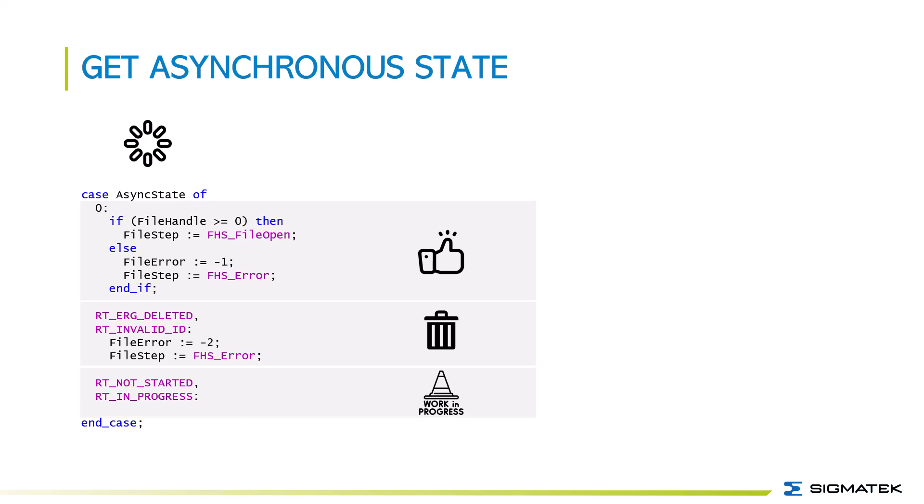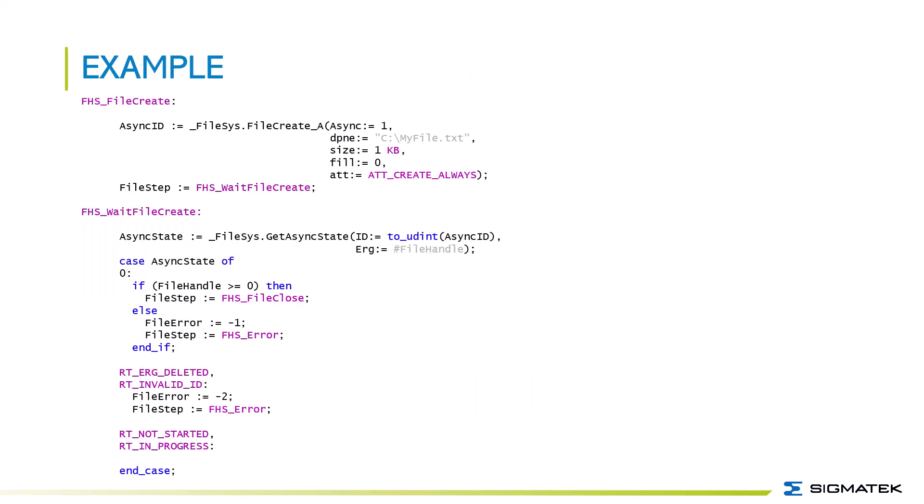As a last part, here is an example of how a file handling step should be set up in an asynchronous way. First you call the method in asynchronous mode, and in the next step you check if the asynchronous function is finished or if it needs more time.